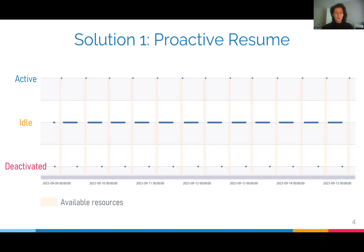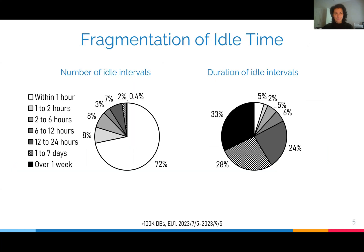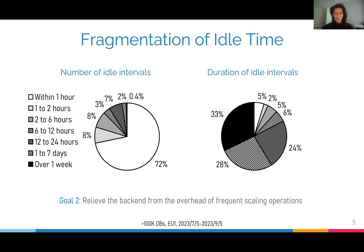Our goal in this project is to predict the login pattern for each database and proactively resume resources a few minutes ahead of predicted customer activity, such that when the customer comes online, resources are already available and high quality of service is guaranteed. We also want to deactivate resources that are idle. Unfortunately, idle time is very fragmented — 72% of idle intervals are very short, within one hour, contributing only 5% to the total idle time duration. We want to avoid pausing resources for such short idle intervals to relieve the backend from the overhead of frequent scaling operations.